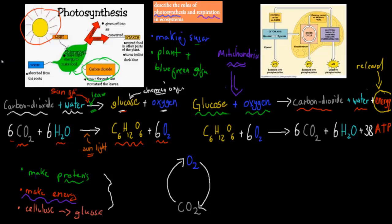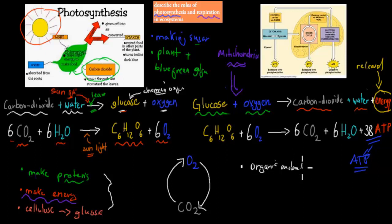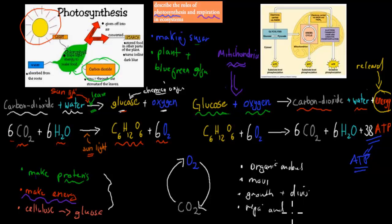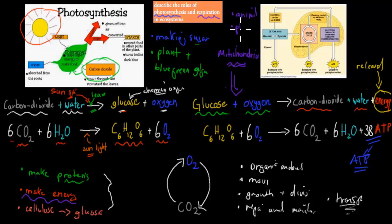We've now released this energy, and in our body we call it ATP. Remember from the last video — what do we need energy for? Energy is there to make organic molecules. We need energy to be able to move, to grow and divide our cells, to repair and maintain our cells, and for transport. These are the reasons why we need cellular respiration. Cellular respiration happens in all organisms — animals, plants, bacteria — they all need energy, and they get it through this process by using glucose originally from photosynthesis.